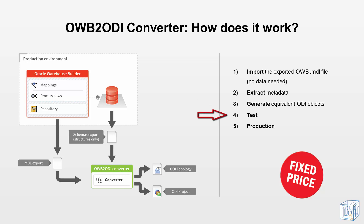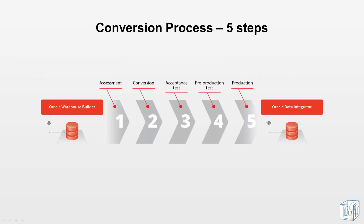Next, the generated ODI project will be sent to you for acceptance testing. And finally, the converted project will be brought into production. This whole conversion process will be done within a fixed timeframe and for a fixed price. Let's have a closer look at the different steps of the conversion process. Each step consists of several subtasks. A detailed description of the different tasks can be found in the step-by-step overview that you can download from our website.